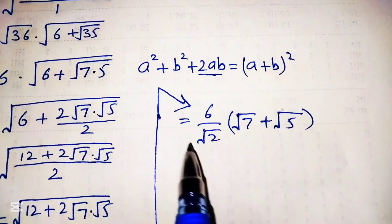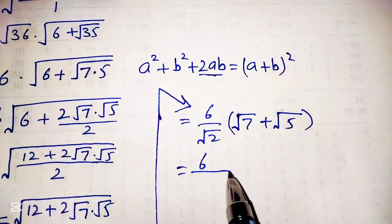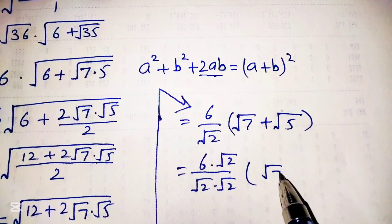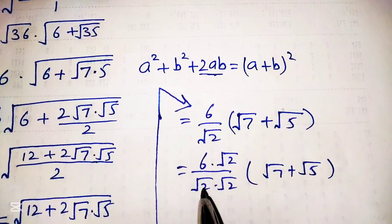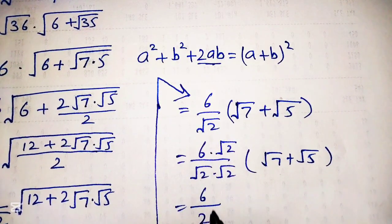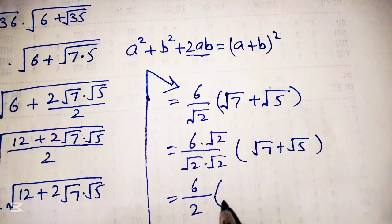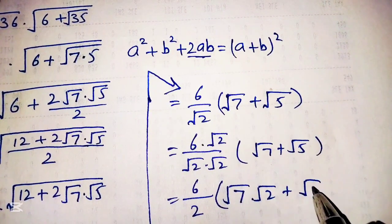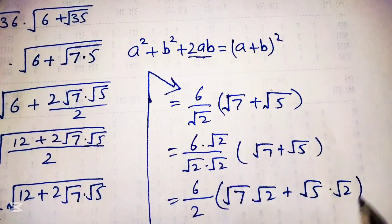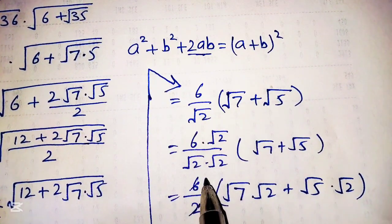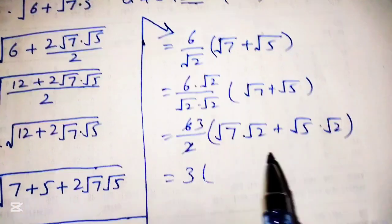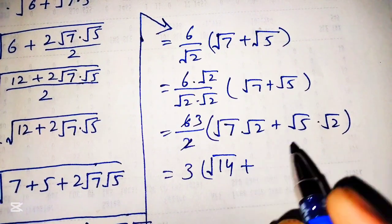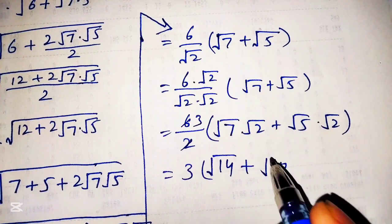Now we will rationalize the square root of 2. For this, we will multiply and divide by square root of 2, giving us this times square root of 7 plus square root of 5. This becomes 6 over 2, and we can multiply the square root of 2 inside the square root to get square root of 7 times square root of 2 plus square root of 5 times square root of 2. Simplifying, 6 over 2 gives us 3. Combining terms inside the square root: 7 times 2 equals 14, and 5 times 2 equals 10.